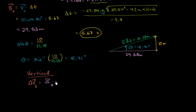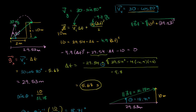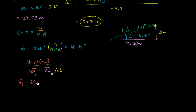We know what the change in time is. Our change in velocity is our final vertical velocity minus our initial vertical velocity. We know what our initial vertical velocity is — we solved for it. Our initial vertical velocity was 29.54 meters per second; that's 30 sine of 80 degrees. So this is going to be: final vertical velocity minus 29.54 meters per second equals the acceleration in the vertical direction, which is negative 9.8 meters per second squared — because it's accelerating us downwards — times our time in the air of 5.67 seconds.